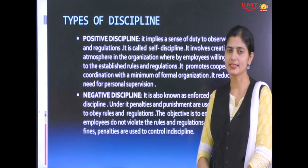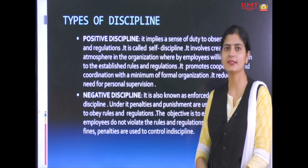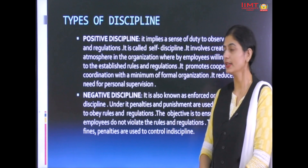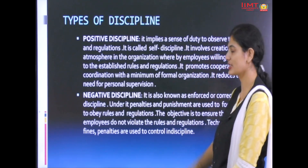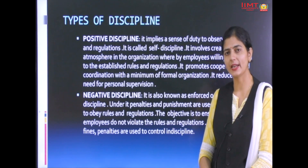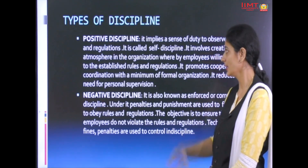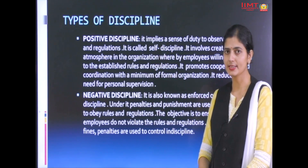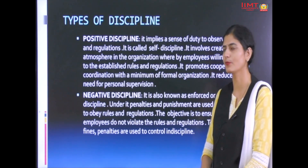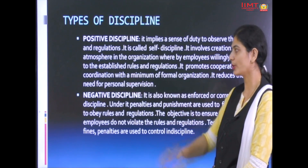Next come what are the various types of discipline? We can classify discipline into two types: positive discipline and negative discipline. Positive discipline, as the name states, is a mode of behavior willingly introduced by an individual — a sense of duty to willingly observe the rules and regulations. It can also be defined as self-discipline, where an employee willingly follows the rules and code of conduct set by the organization. When an employee willingly follows the rules, only a low level of supervision is required — general supervision is sufficient — and it helps create a positive environment full of coordination and cooperation.